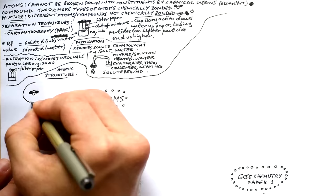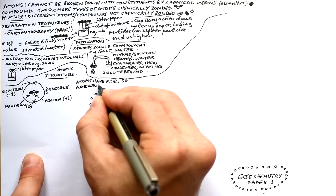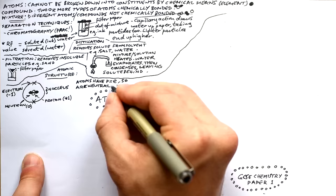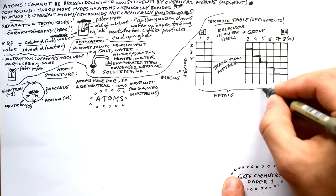An atom has neutrons and protons in the nucleus, with electrons orbiting the outside. Protons have a charge of +1, electrons have a charge of −1, and neutrons are neutral. Atoms have the same number of protons as electrons, so they are overall neutral. When an atom loses electrons it becomes a positive ion; when it gains electrons it becomes a negative ion.